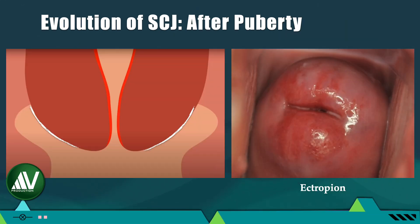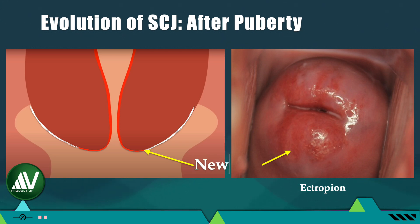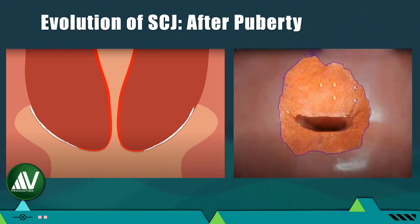After puberty, with the HPGA becoming functional and under the influence of estrogen secreted by the ovary, the columnar epithelium of the endocervix starts growing outwards. Thus a new squamo-columnar junction is formed, peripheral to the original one. On naked eye examination, the ectocervix shows velvety areas around the external os, called ectropion or eversion of the cervix. The capillaries run in juxtaposition to the single layer of cells, and under magnification of the colposcope it looks like a spread of red grapes.